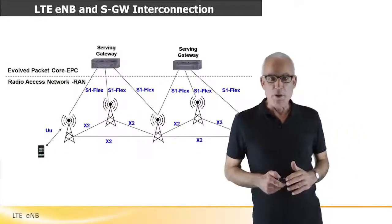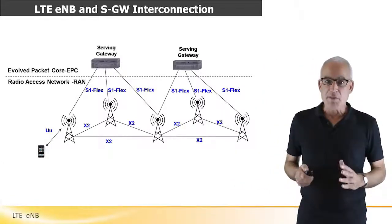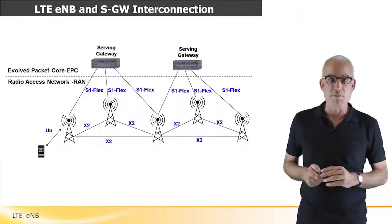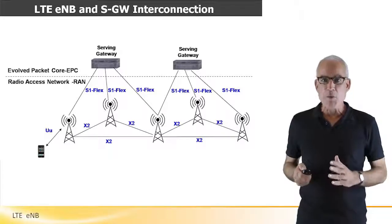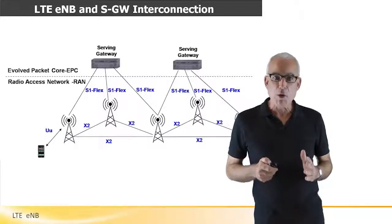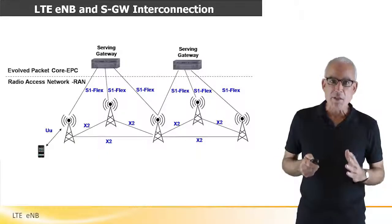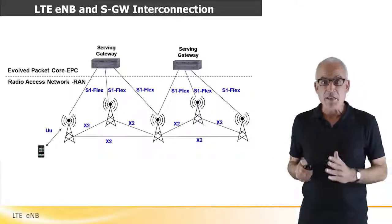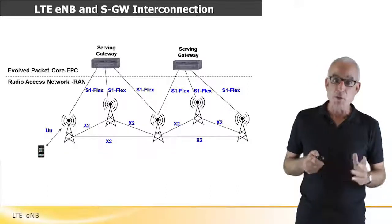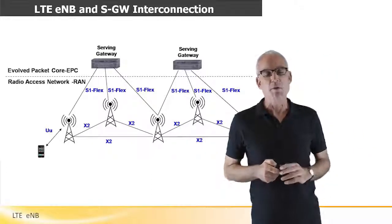Let's have a look for a moment at the way multiple base stations and serving gateways are interconnected. As can be seen here, a serving gateway serves multiple base stations, E0Bs. A single E0B may be served by multiple serving gateways. The E0Bs themselves are connected between them using the X2 interface. When a specific network is designed, the designer identifies the E0Bs that may need to transfer end-off related data — this will probably be neighbor E0Bs — and provides an X2 interface between them.